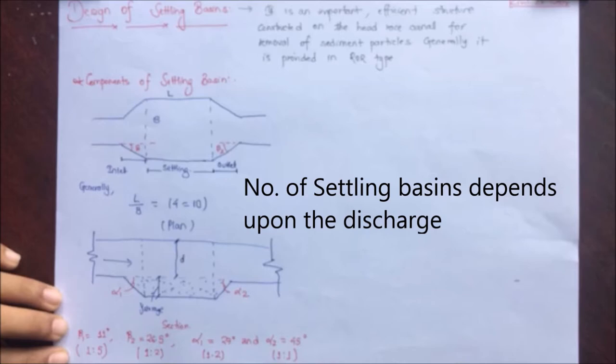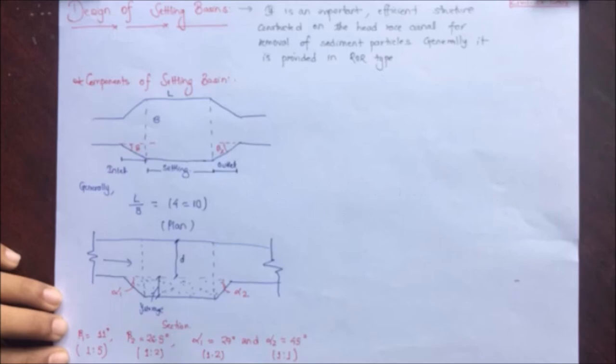Please don't get confused about the number of settling tanks in a hydropower project. It is not necessary that there will be only one settling tank — it depends upon the discharge. If the discharge is less, a single settling tank is sufficient. But if the discharge is greater, more settling tanks will be necessary. For example, if the discharge is 10 m³/s, a single tank may be sufficient, but if it exceeds 60 m³/s, additional settling tanks may be necessary.